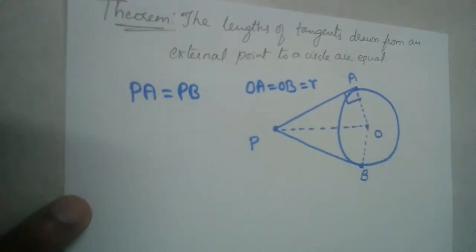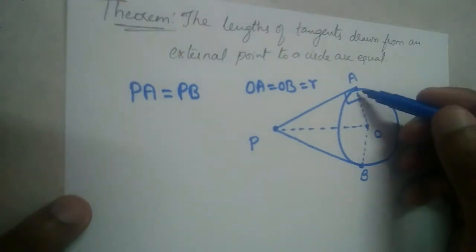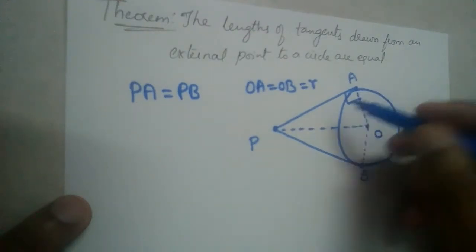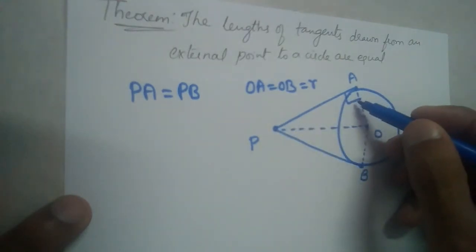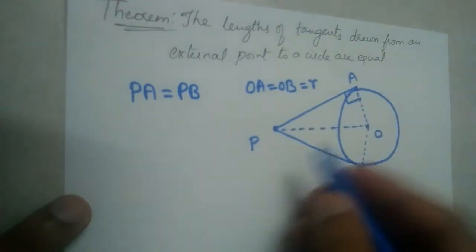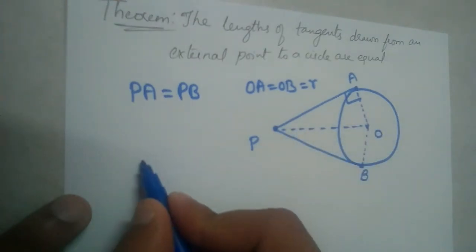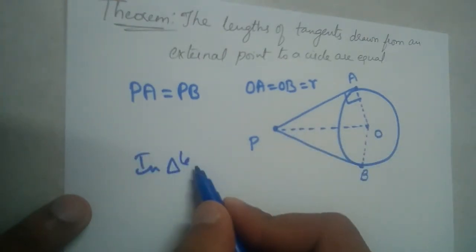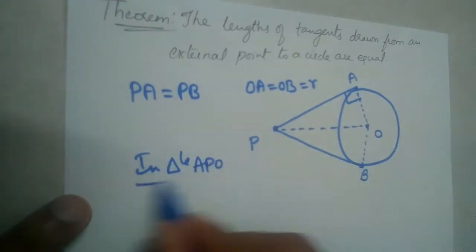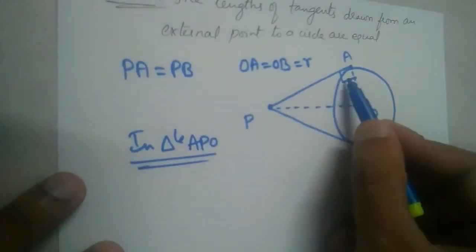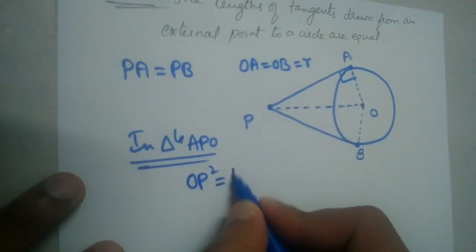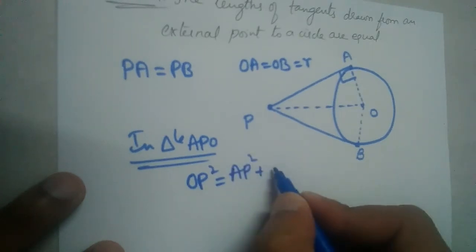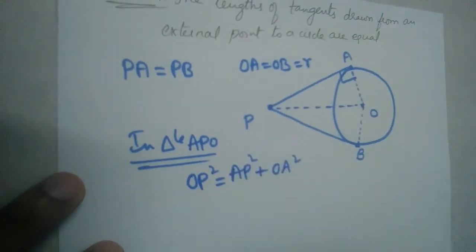So, angle A is 90 degrees because in one of the theorems we have studied that radius and tangent will be perpendicular to each other through the point of contact right. So, if we apply Pythagorean theorem in triangle APO, 90 degrees is at A, OP will be hypotenuse. So, OP square is equal to AP square plus OA square.